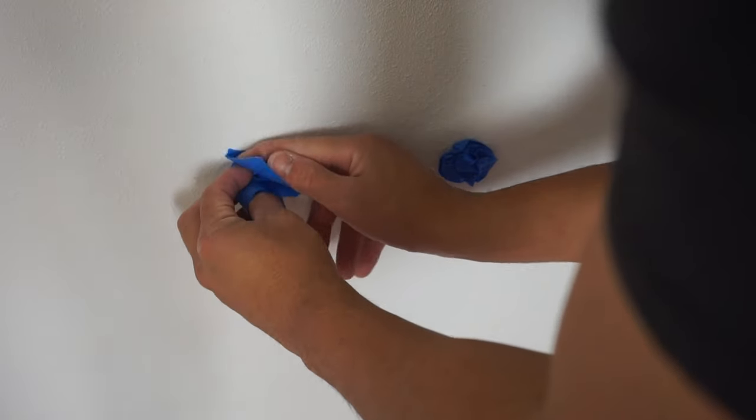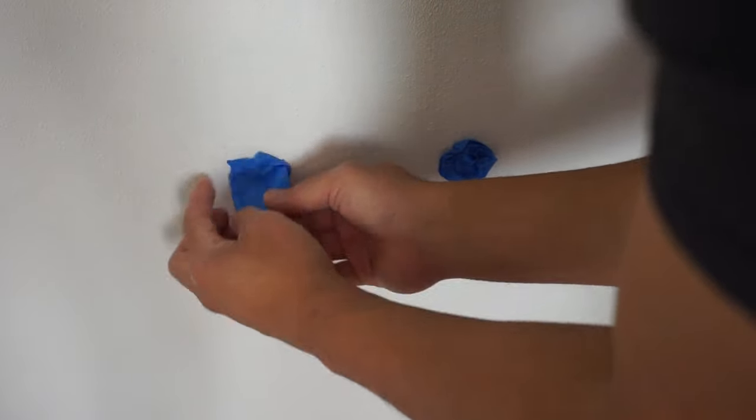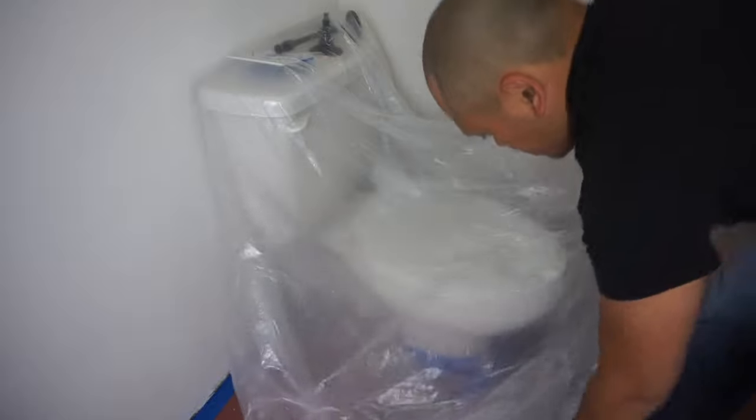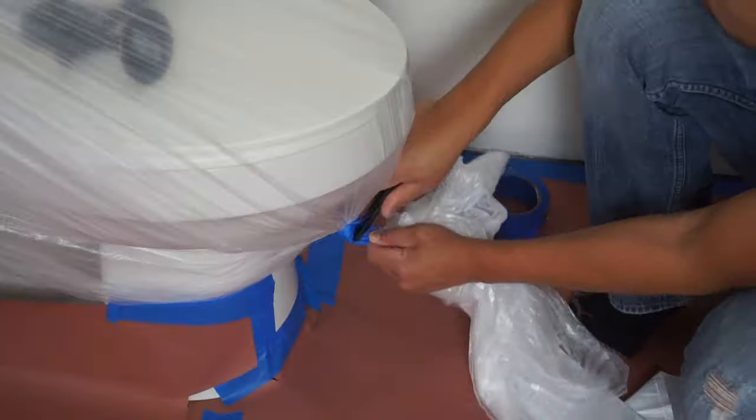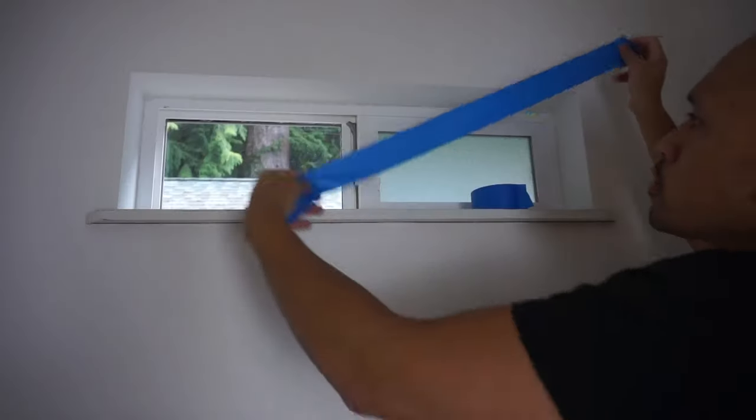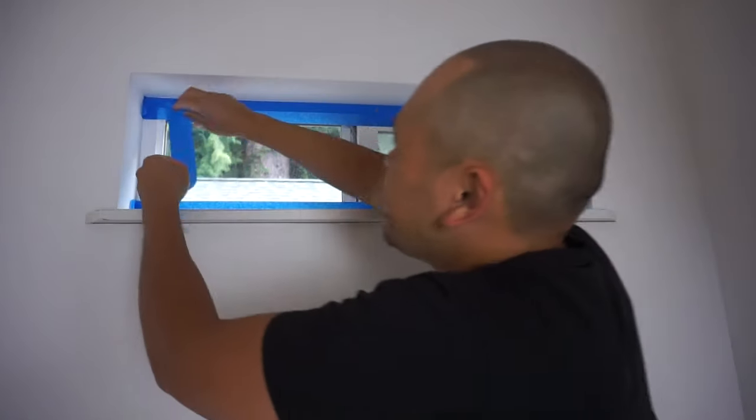When it comes to odd size objects like this toilet seat for example I like to use a 7 mil plastic drop because it costs a lot less and I don't have to use those expensive paper covers like I did on the floor and it saves a lot more time.